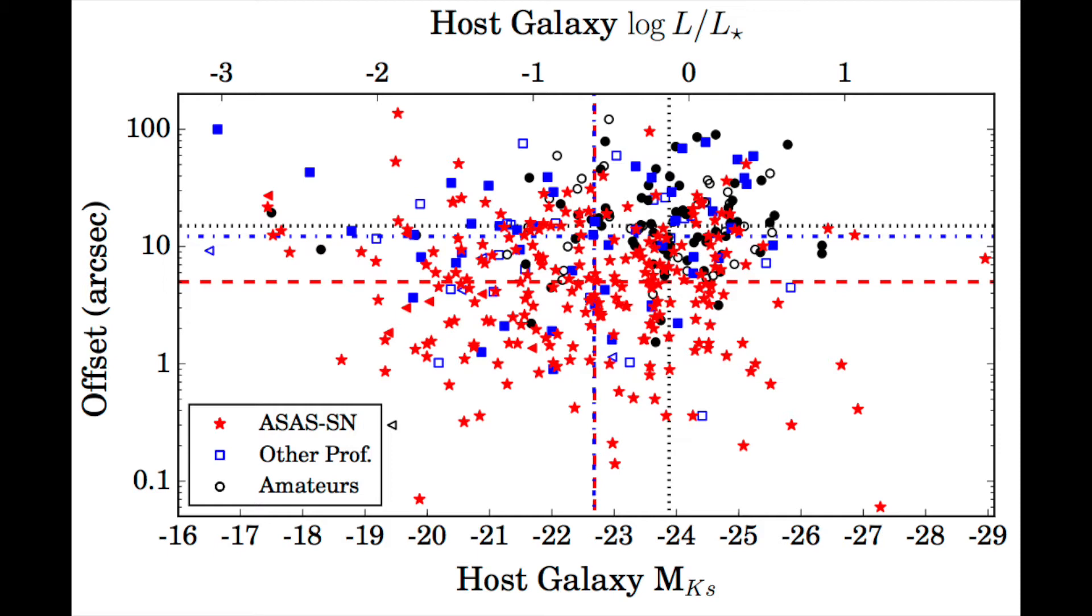Here, red stars represent ASASSIN discoveries, blue squares represent discoveries by other professional surveys, and black circles represent discoveries made by amateur observers. The corresponding lines represent the median offsets and magnitudes.